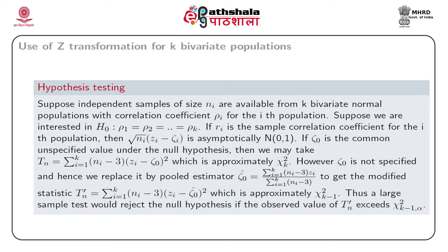We define the statistic t_n as summation from i=1 to k of (n_i - 3) multiplied by (z_i - zeta-naught) squared, which is approximately distributed as chi-square with k degrees of freedom. However, zeta-naught is not specified, so we replace it by the pooled estimator zeta-naught-hat, which is the weighted mean of z_i with weights n_i minus 3. The modified statistic t_n-dash is then obtained by plugging in zeta-naught-hat.